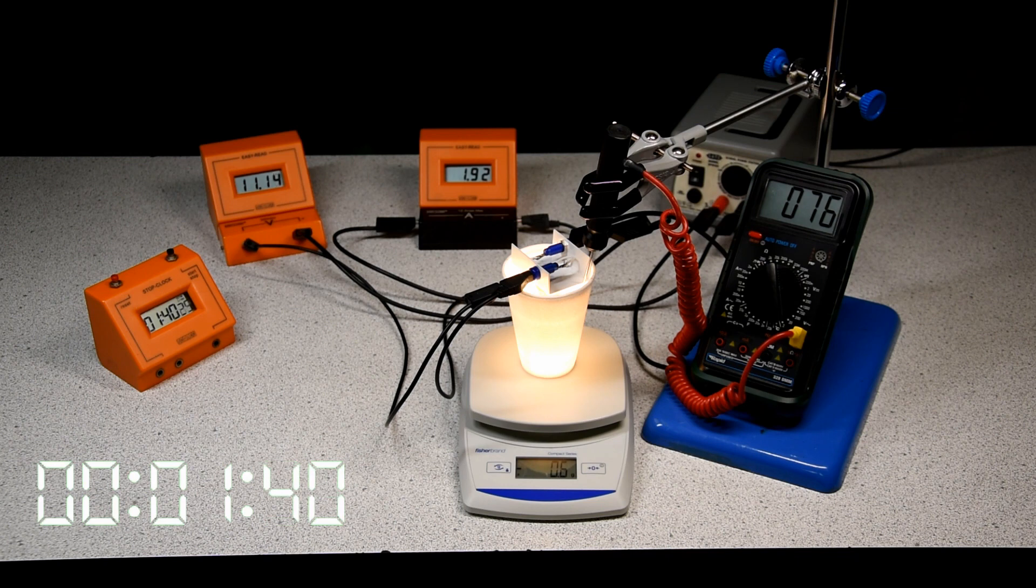This time, the equation is delta Q equals delta M times L. The change in energy is equal to the change in mass times the specific latent heat. So the latent heat is the change in energy divided by the change in mass. The experiment is run for four minutes and the specific latent heat of vaporization calculated.